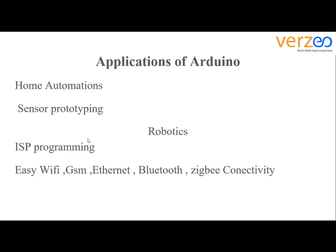ISP programming and Wi-Fi and other connectivity features are related to networking and are among the most important parts and functions of Arduino. ISP programming covers how you can keep your network safe using Arduino. The supported connectivity options include Wi-Fi, GSM, Ethernet, Bluetooth, and ZigBee connectivity, all of which can be implemented using Arduino.